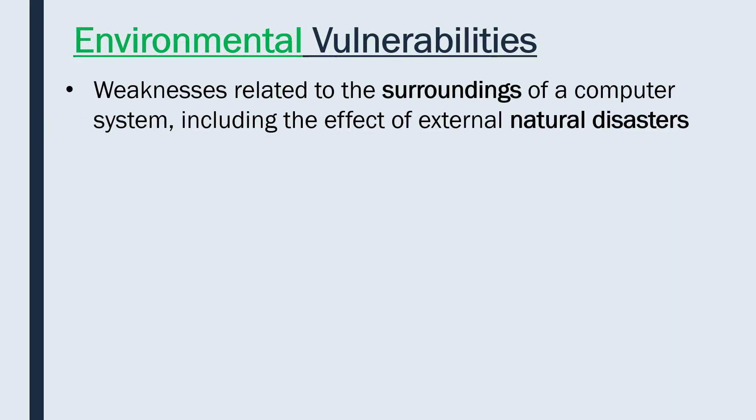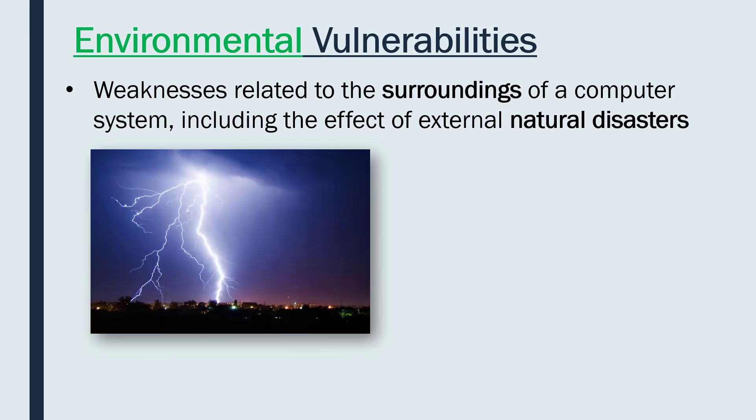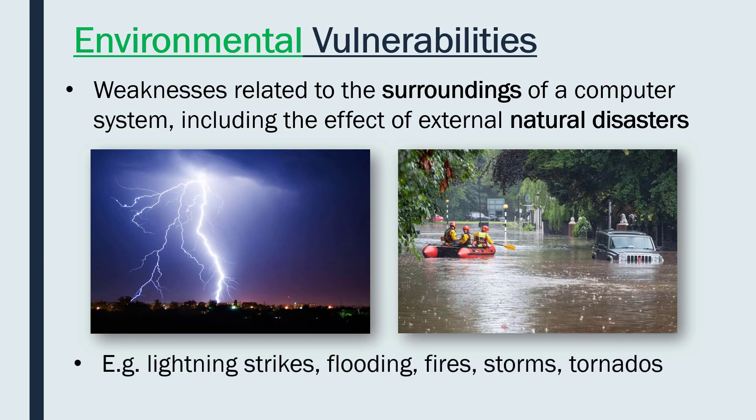First of all, environmental vulnerabilities. These are weaknesses related to the surroundings of a computer system, including the effect of external natural disasters. Our asset here is our computer systems, which may have important data on them. This is really about things we can't control but can mitigate against — things like lightning strikes, flooding, fires, storms, and tornadoes — things which we can certainly reduce the impact of, but can't really control.